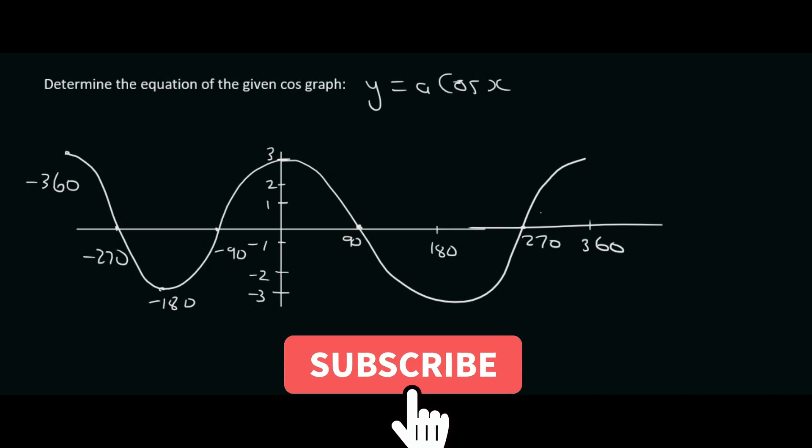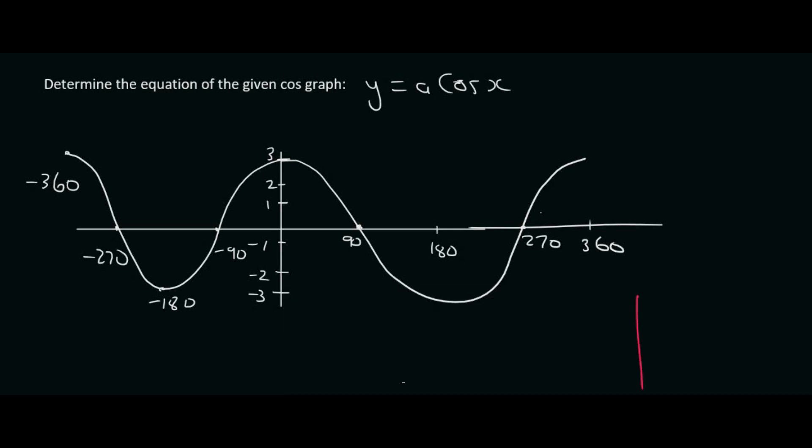In this question we have a cos graph. We know that because a cos graph always starts high up and then goes down like that. Whereas a sin graph always starts at the origin and then goes up like that. Now we know that and also another reason we know is because they've told us.